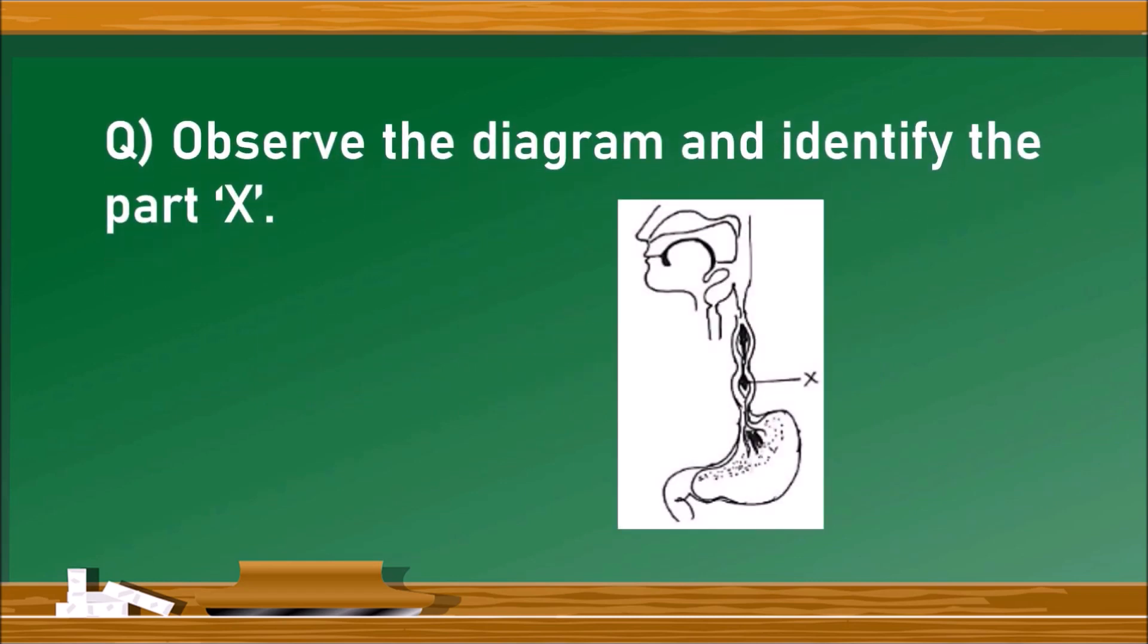Next question. Observe the diagram and identify the part X. In this diagram, which represents the movement of food through the esophagus, the part indicated as X is the food inside the esophagus, that is bolus. Because the food which is completely chewed and mixed with saliva in our mouth is called bolus, bolus travels through the esophagus to reach the stomach. Hence the part indicated as X is bolus.